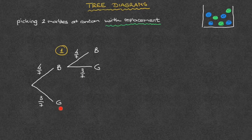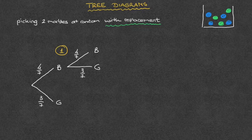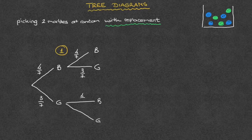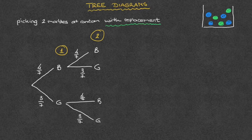Now let's go back. If we had picked a green marble first, then we could once more either pick a blue or a green marble. We add that to our tree diagram by drawing two more branches starting behind the green outcome. And again, because we put the first marble back inside the bag, the probability of picking a blue marble is still four out of seven, and the probability of picking green is still three out of seven. That's the second marble taken care of, and we've now drawn the tree diagram for this experiment.